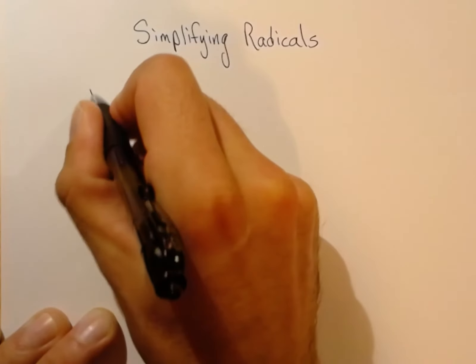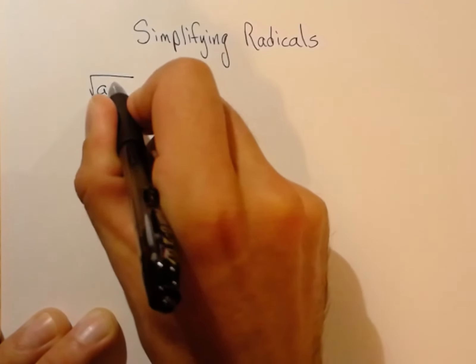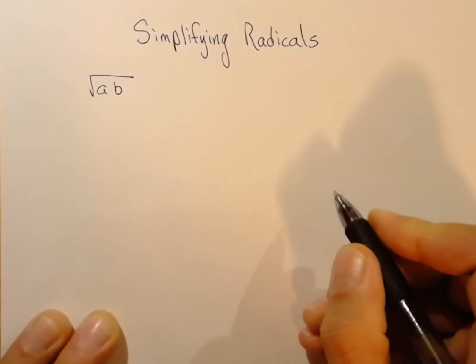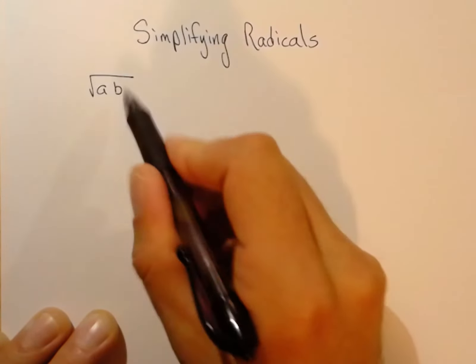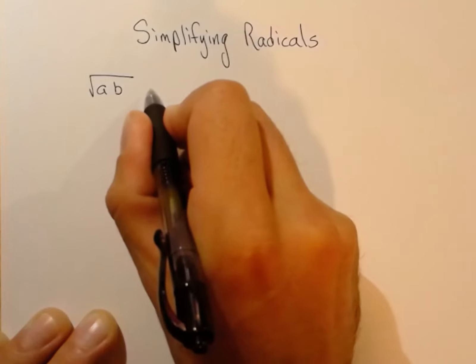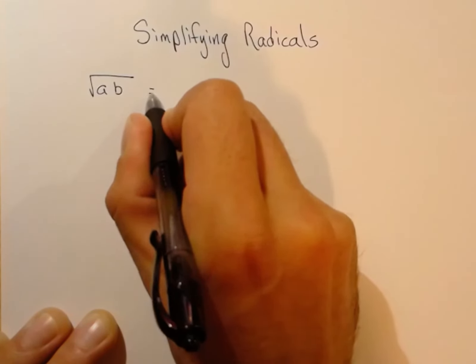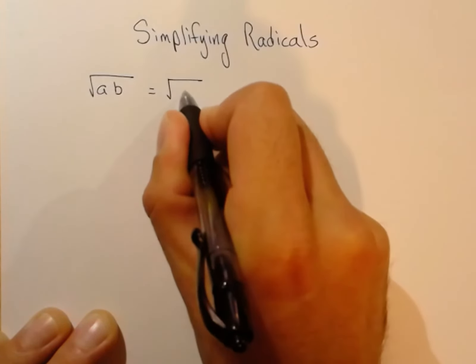Radicals, or square roots, at their foundation are a multiplication operation. What number times itself equals the number under the radical symbol? And there is an awesome result because it is a multiplication operation.